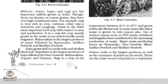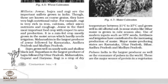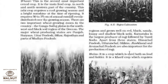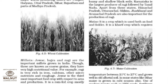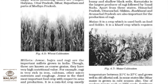Ragi is the crop of dry regions and grows well in red, black, sandy loamy, and shallow black soils. Karnataka is the largest producer of ragi, followed by Tamil Nadu. Apart from these states, Himachal Pradesh, Uttaranchal, Sikkim, Jharkhand, and Arunachal Pradesh are also important for the production of ragi.